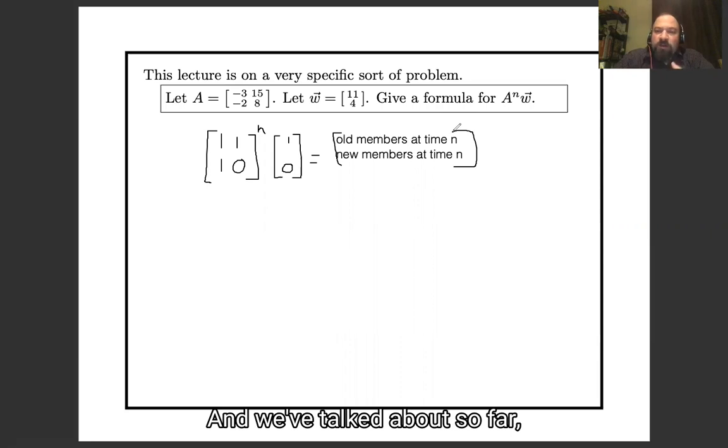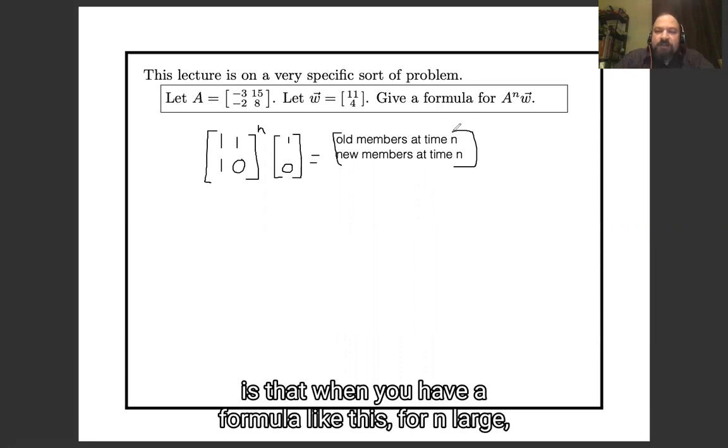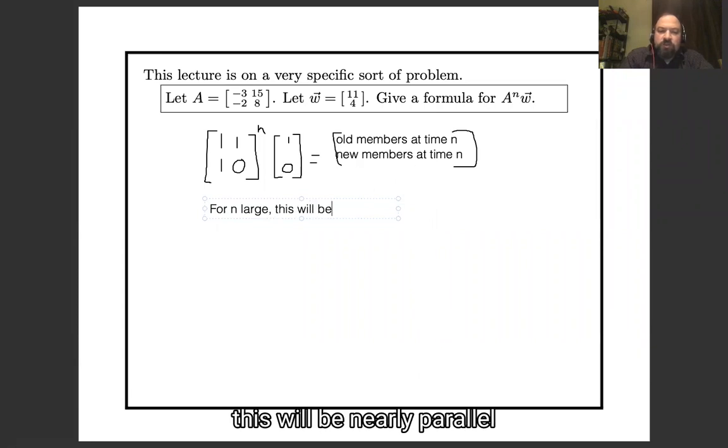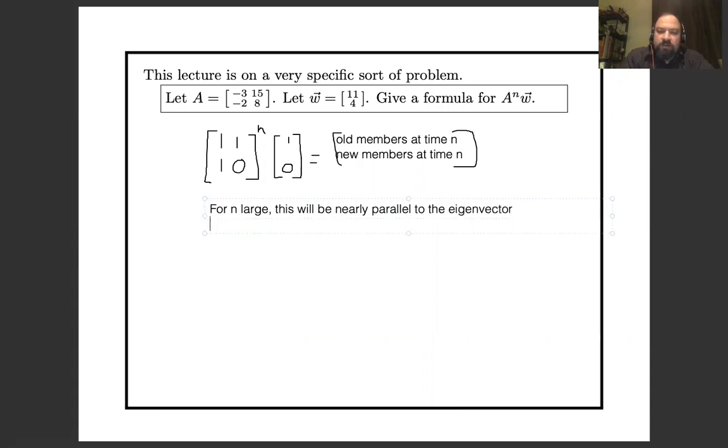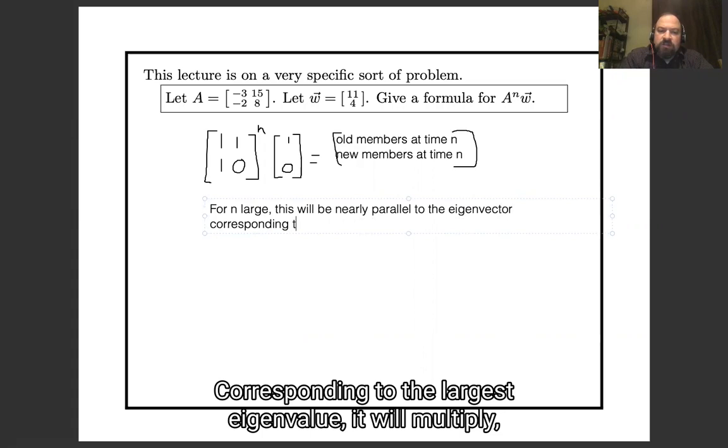And what we've talked about so far is that when you have a formula like this, for n large, this will be nearly parallel to the eigenvector corresponding to the largest eigenvalue.